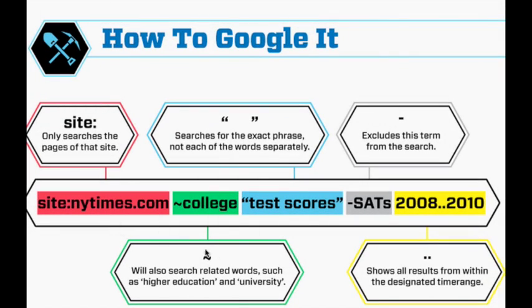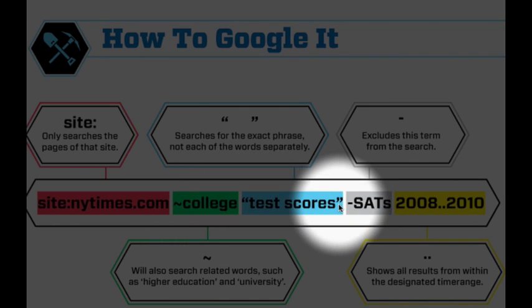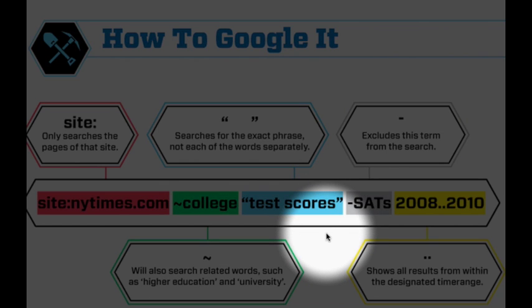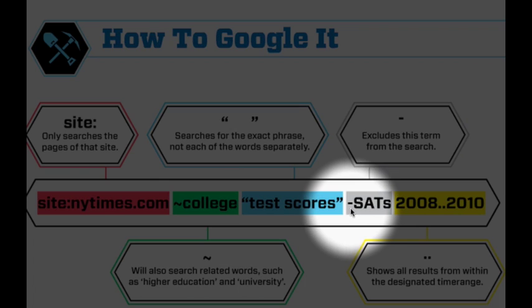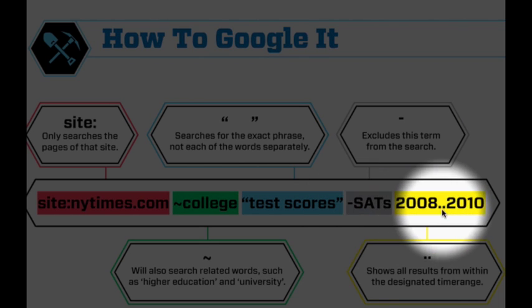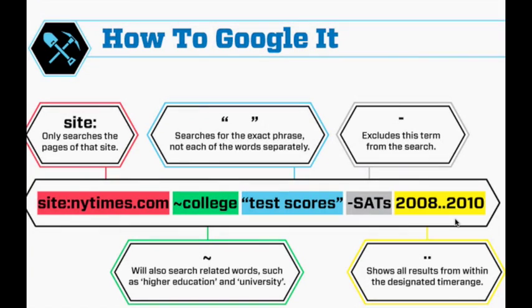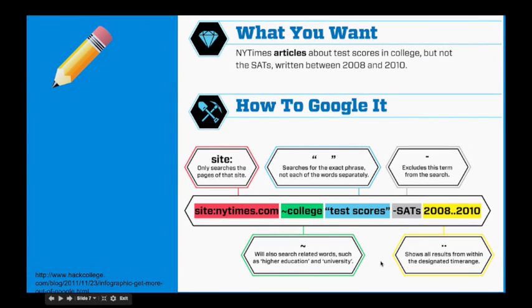The tilde function has been removed from Google, so ignore that. We put quotation marks around 'test scores' to search for that exact phrase. We use a dash in front of SAT to exclude it from our search. Then we put two periods between 2008 and 2010 to give a date range for when the article was written. There's a lot going on in that search beyond just typing 'test scores in college' — you can really narrow down your search and find exactly what you're looking for.